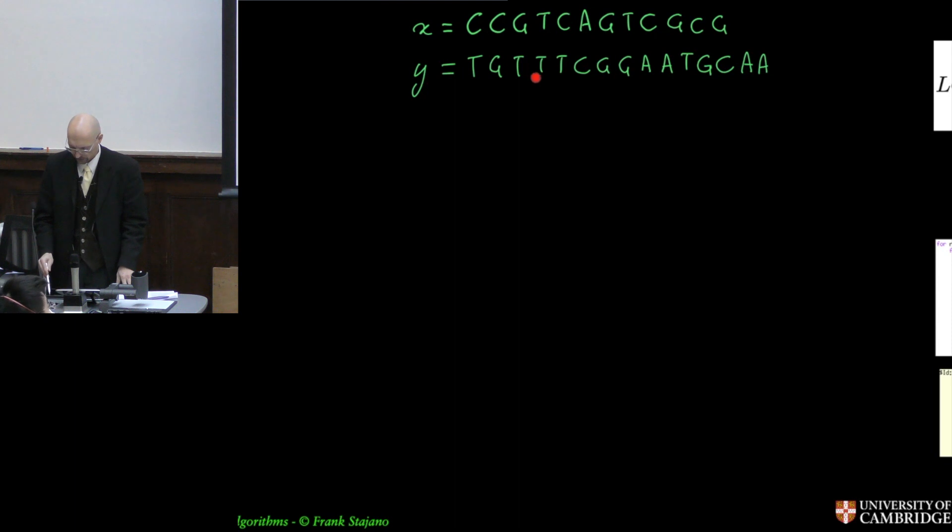And the subsequence is what you obtain by keeping some of the characters and dropping others. And so the subsequence cc exists in here, but cc exists in here. So that's a common subsequence between those two. And you want to find a subsequence common to both and of maximum length. There could be several, just like there were several optimal solutions in the previous problem. There could be several optimal solutions in this problem too. And you want to find some optimal solution to this.